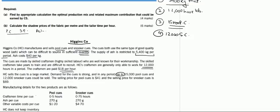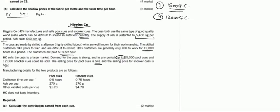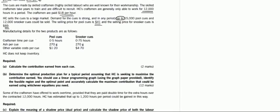The selling price for pool cues is $41 and the selling price for snooker cues is $69. After that, it states that the manufacturing details for the two products are as follows. It says that pool cues and snooker cues take this much of labor time, they take this much of material, and there are certain other variable costs. HCC does not keep any inventory.